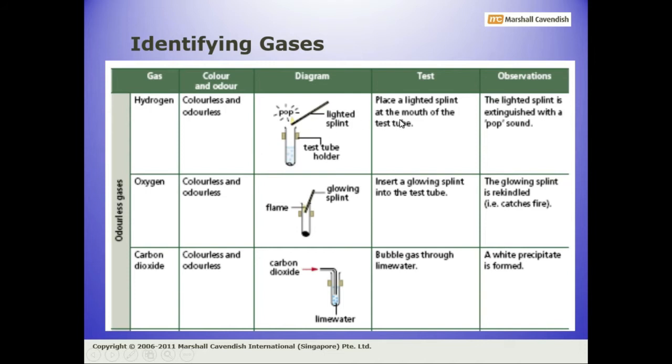To identify their presence, the test for hydrogen is: place a lighted splint at the mouth of the test tube in which the gas is producing. If the lighted splint extinguishes with a pop sound, it confirms the presence of hydrogen. So here is the observation you have to learn: the test and their observation.